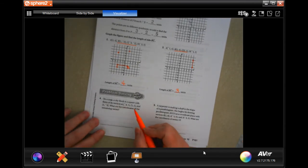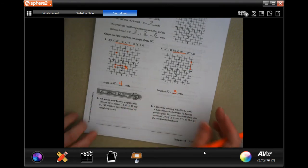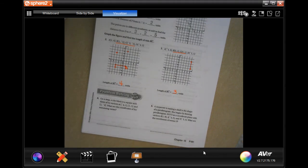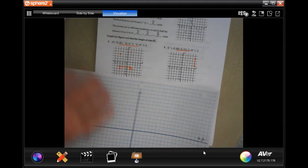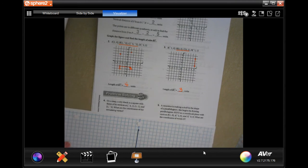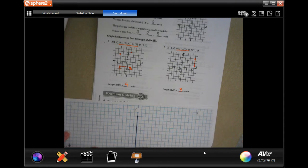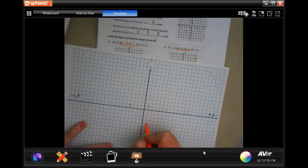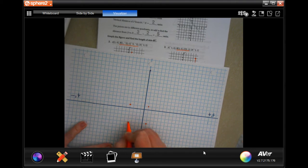Okay, on a map of city blocks is a square with 3 of its vertices at negative 4, 1, 1, 1, and 1, negative 4. So 1, 2, 3, 4, 1, boom, okay, and 1, 1, and 1, negative 4.